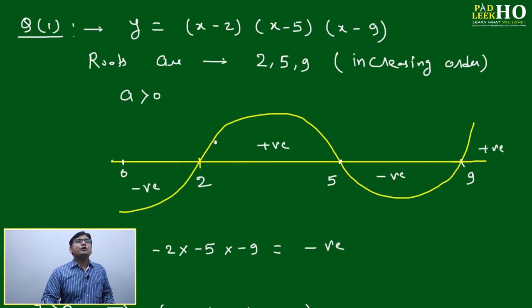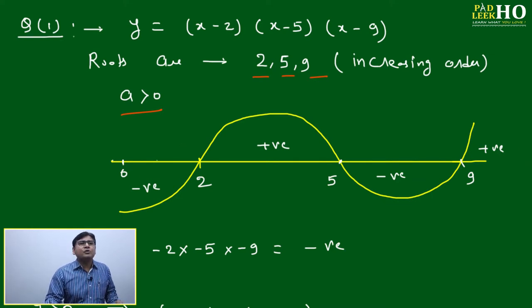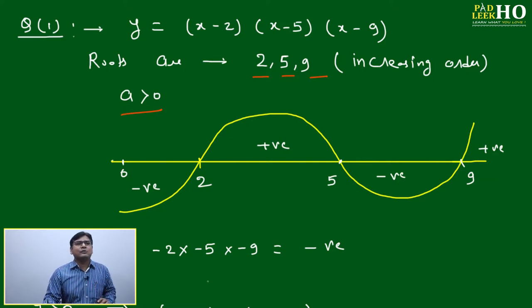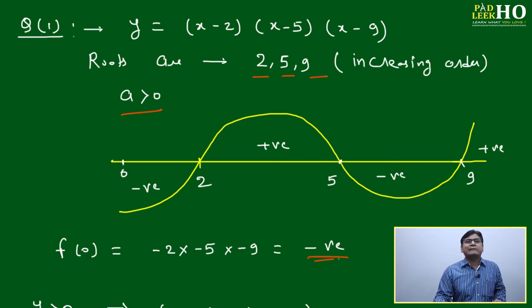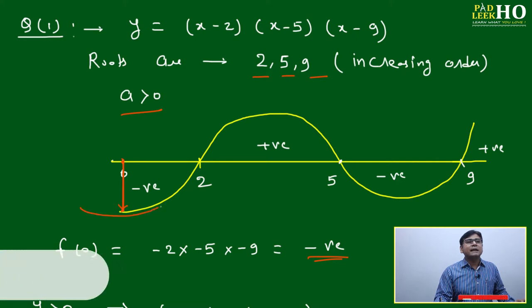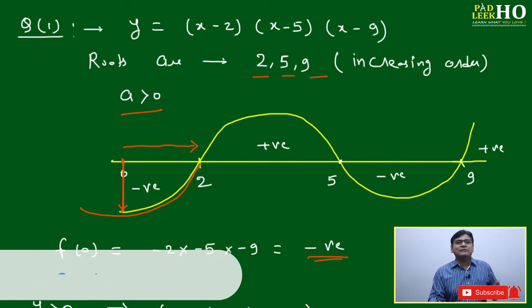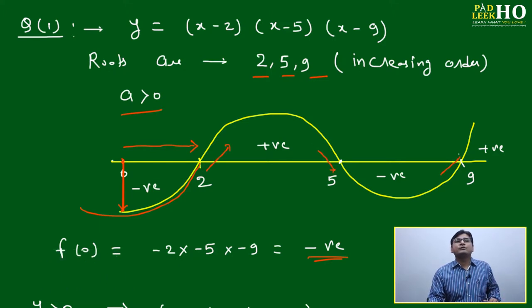Take the example: y = (x - 2)(x - 5)(x - 9). The roots are 2, 5, 9 in increasing order. The coefficient a is positive (1 × 1 × 1 = +1), so a > 0, meaning we start from the negative side: negative, positive, negative, positive. To verify using the origin: substituting x = 0 gives (-2)(-5)(-9) = -90, which is negative. Since f(0) is negative and 0 lies to the left of root 2, the curve is negative before 2, then crosses to positive, then negative, then positive.